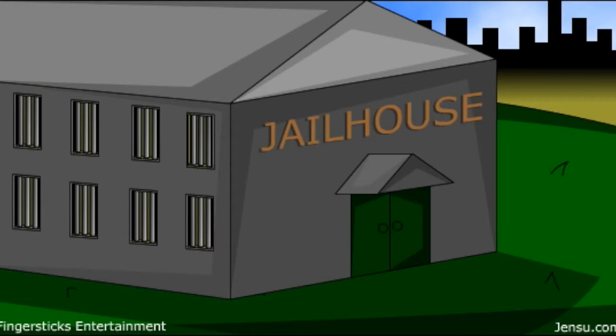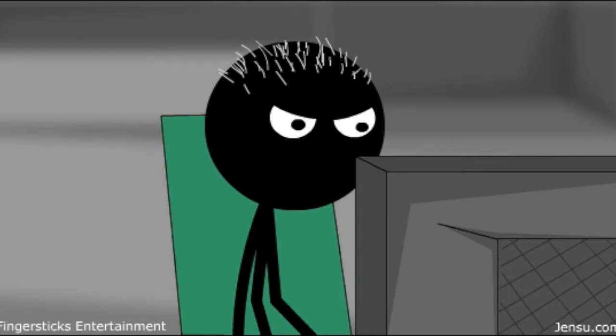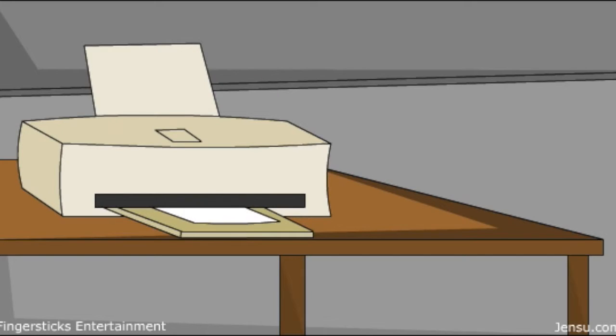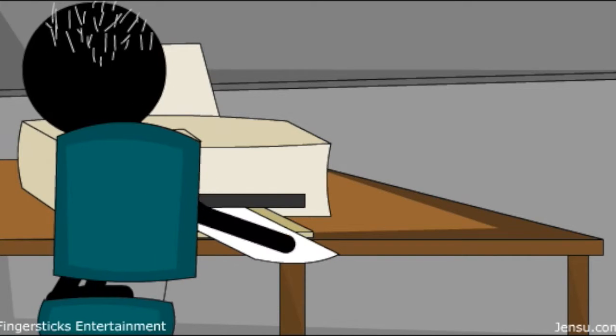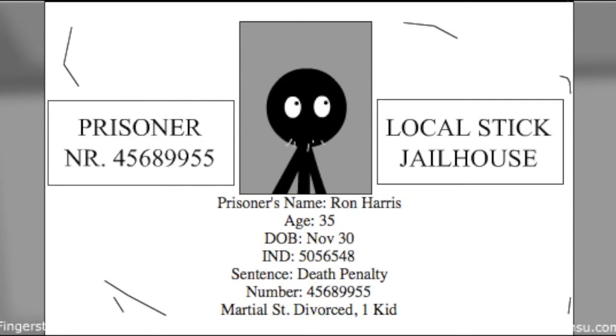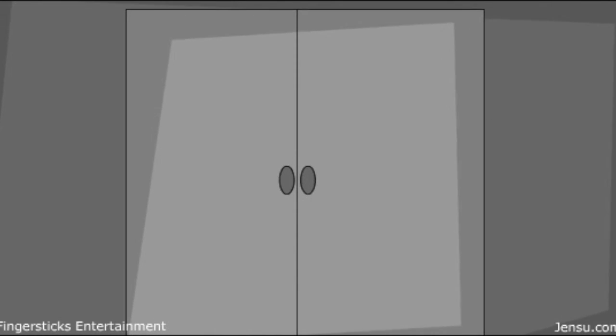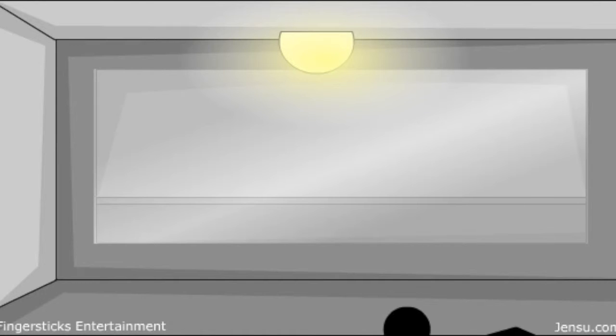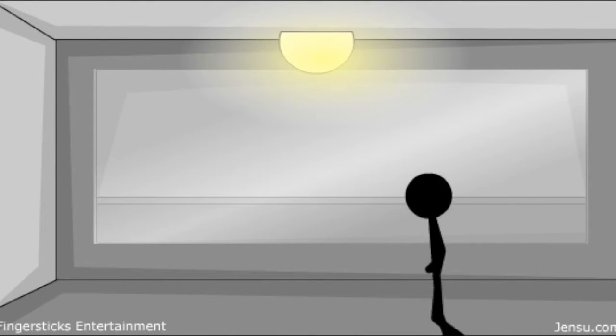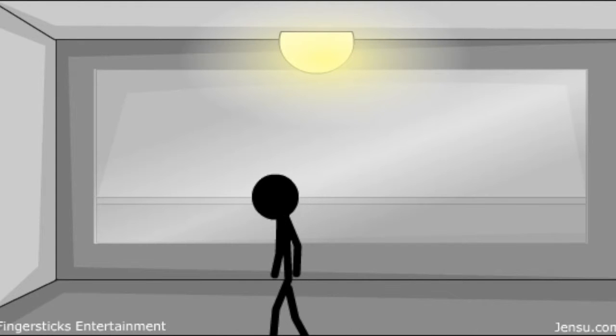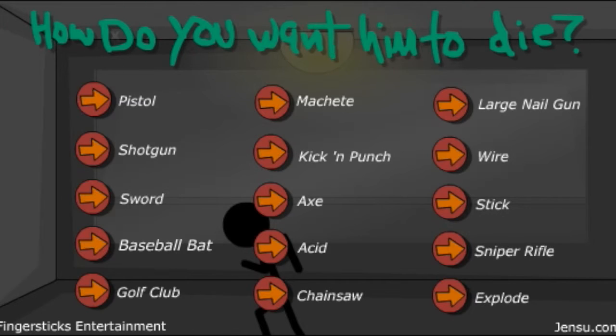Okay. Jailhouse. There's a guy on the computer. He is typing, I don't know. How do you want him to die? Oh, I can choose? I can choose things. Okay.